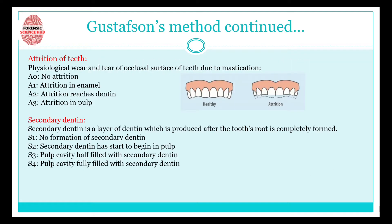The first criterion is attrition of teeth. Attrition means physiological wear and tear of occlusal surfaces of the teeth due to mastication. Our teeth are responsible for grinding, chewing, tearing, and so on. With time, wear and tear of teeth starts to occur, causing attrition. A healthy tooth is shown alongside a tooth in which attrition has occurred — the tooth has decreased in its length.